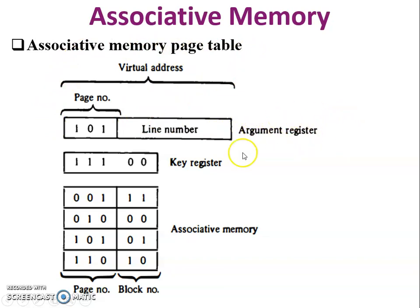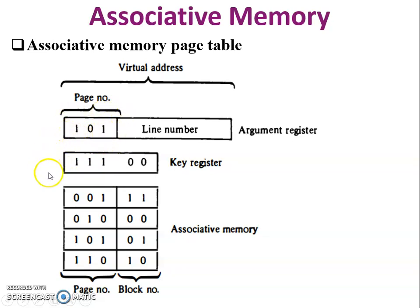An example is given — the associative memory page table. This is the argument register, this is the key register, and this is the associative memory. Page number 101 is to be found in associative memory. The key register has all bits as one, so the masking process is done, and 101 is searched — block number 01 is found in associative memory.